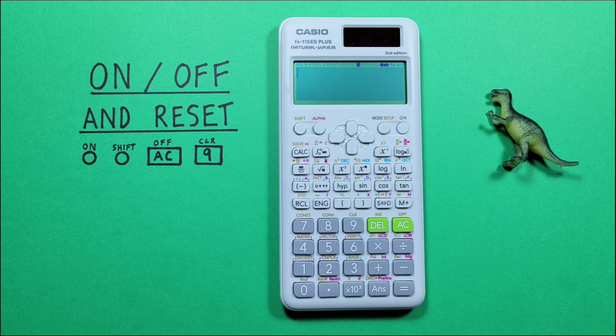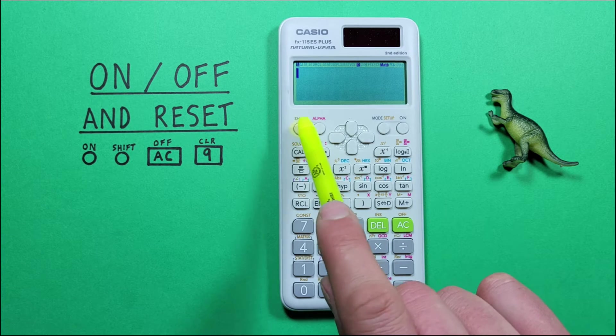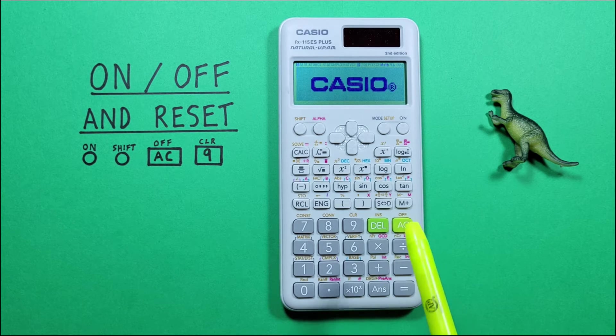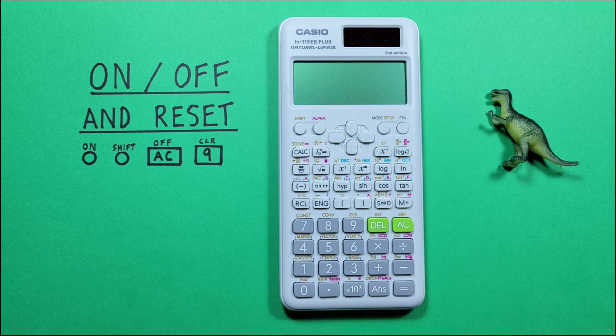If we're done working with our calculator and want to turn it OFF to save batteries, we do this by pressing the SHIFT key and then the AC with the SHIFT function of OFF. There we go, our calculator turns OFF and we're saving those batteries.